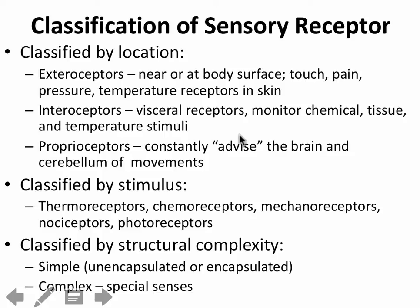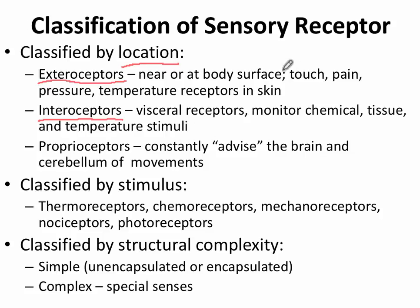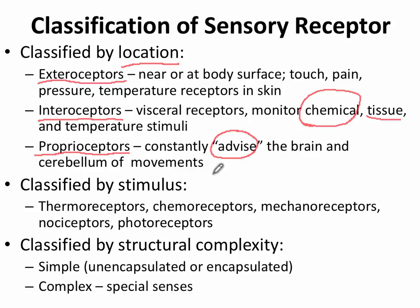The final slide for this section summarizes these receptors. They are classified by location: near or at the body surface, external to the body, or deep within the body. Visceral receptors or chemoreceptors lining blood vessels are examples of internal receptors. Proprioceptors — which constantly advise the cerebellum about movements — include the Golgi tendon receptor, the muscle spindle, and joint kinesthetic receptors.